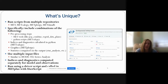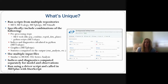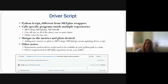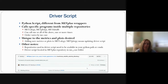The indices and diagnostics are computed separately for the model and the observations, and then something is done from the output. Finally, they're run using what we call a driver script in METplus, called with METplus's User Script command. A driver script is a Python script, but it's different from the METplus wrappers because it doesn't call MET tools — it calls specific programs inside multiple repositories: METcalcpy, METplotpy, and METdatadb.